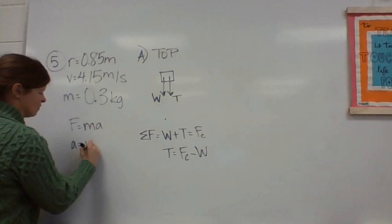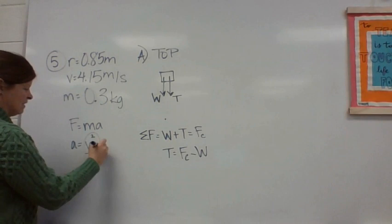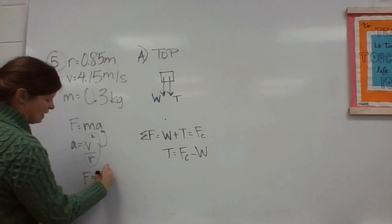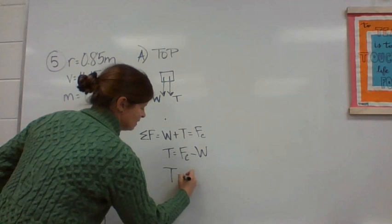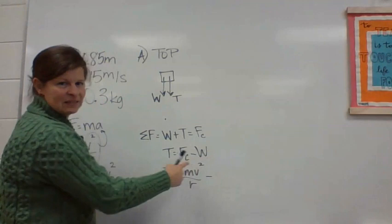So I can substitute V squared over R in for A and get F equals M V squared over R minus, and in place of W, I'm going to put MG.